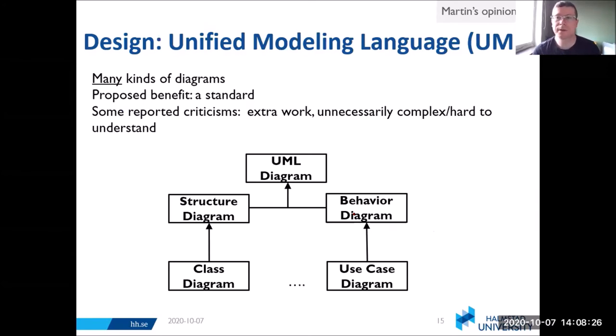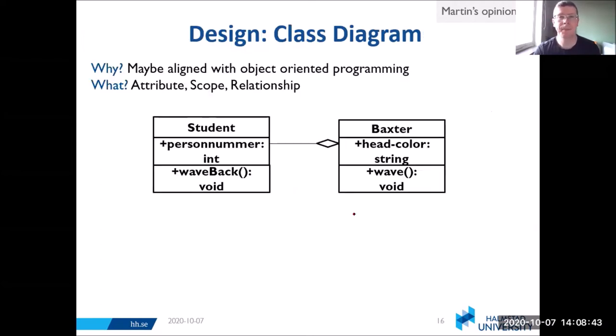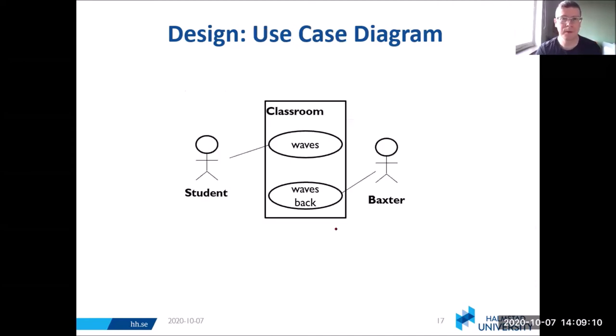Unified modeling language—there's many kinds of diagrams comprised by UML. The proposed benefit is that it's a standard. However, some people have mentioned criticisms that it's extra work, that it might be too complicated or hard to understand. One kind of diagram that might be useful is the class diagram, which is possibly aligned with object-oriented programming. It's a way to depict attributes, scopes, and relationships. Here you have attributes like a Swedish person number. The scope is public, and you have a relationship with N students to one Baxter. Use case diagrams are also quite common.